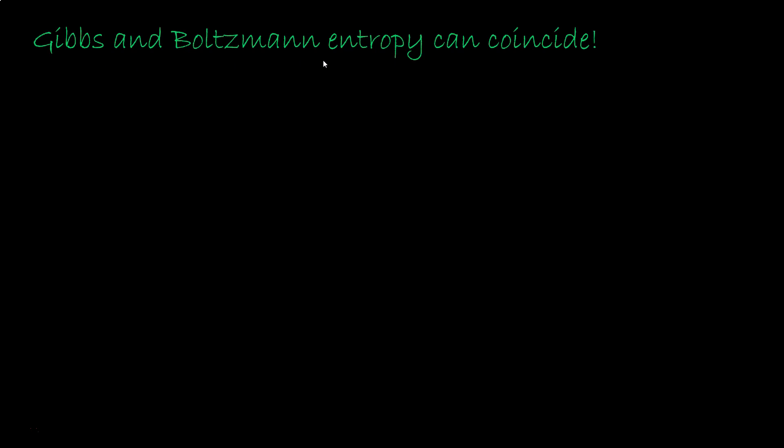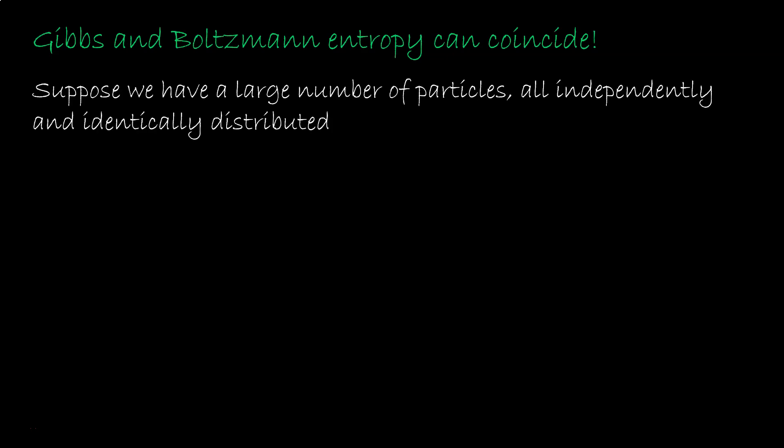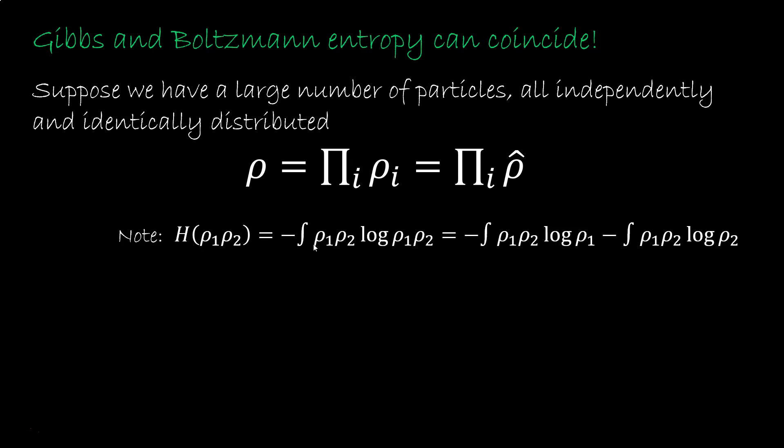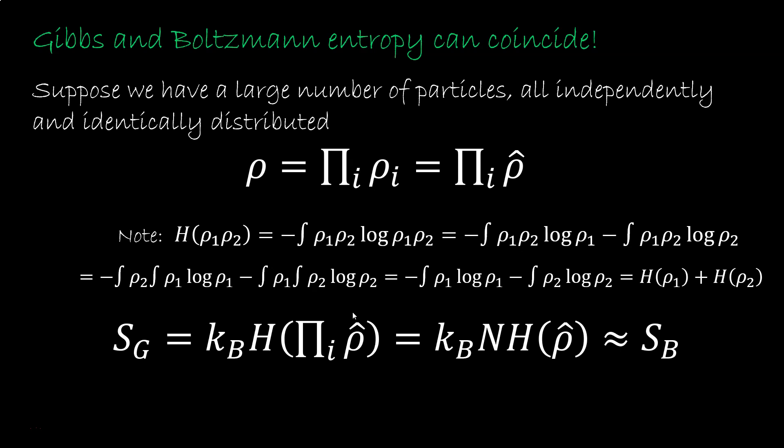Now, the Gibbs and the Boltzmann entropy can coincide, which makes the thing even more confusing. But only in a specific case. Suppose we have a large number of particles, all independent, all identically distributed. So the rho distribution factorizes, they are independent, to the same rho hat, they are identically distributed. So if you do the math, you see that for independent distribution the Shannon entropy sums. Essentially you have the log of the product, which is the sum of the log, and each distribution integrates to 1. So in that case, the Gibbs entropy will be the entropy of the product of rho hat n times, which means it's n times the variability of rho hat, which is approximately the Boltzmann entropy. So in this specific case, the variability within a macrostate is approximately the variability of the particles within a single microstate. But this is not always the case. This is a special case.